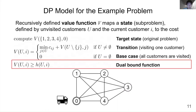In DIDP, in addition to the definition of the value function, a user can incorporate a dual-bound function h into a model. A dual-bound function returns a lower bound on the optimal cost for minimization. The dual-bound function is unnecessary to define a model, but a solver may benefit from it. This is an important feature of DIDP.